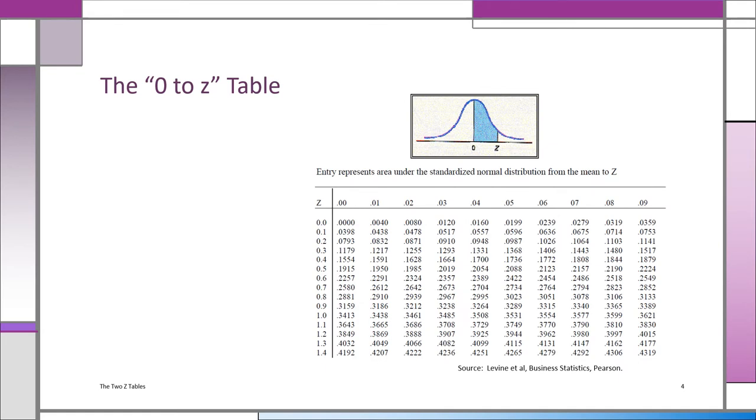This is the table we've been using. We might call it the zero to Z normal distribution table. It shows you the area under the standard normal curve of the Z-distribution between zero, the mean, and a particular Z-value. And we've been using it in two ways. You have a Z-value, you look up the area under the curve, that's the shaded blue area in the picture. Or if you have the probability, the area under the curve, you go into the table with that and look up the closest Z-value.